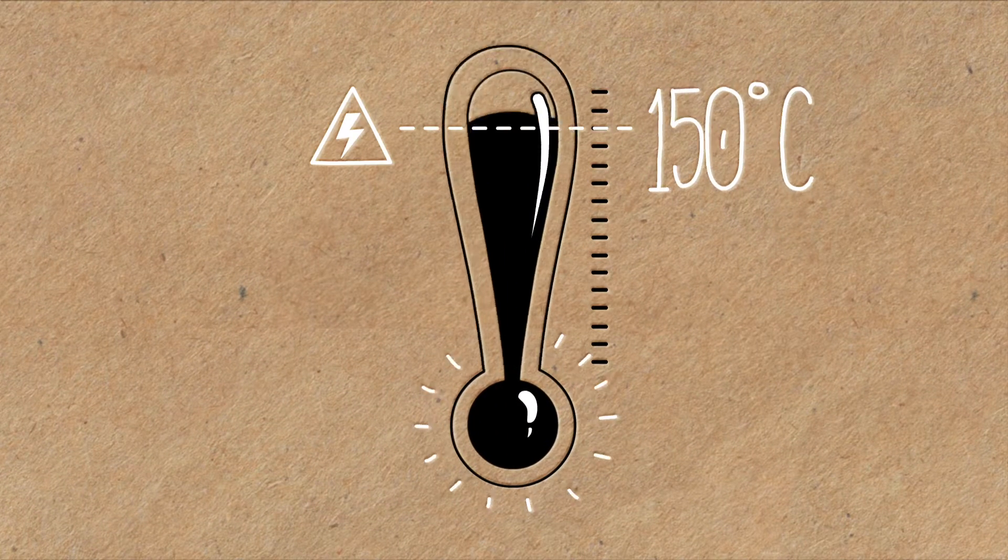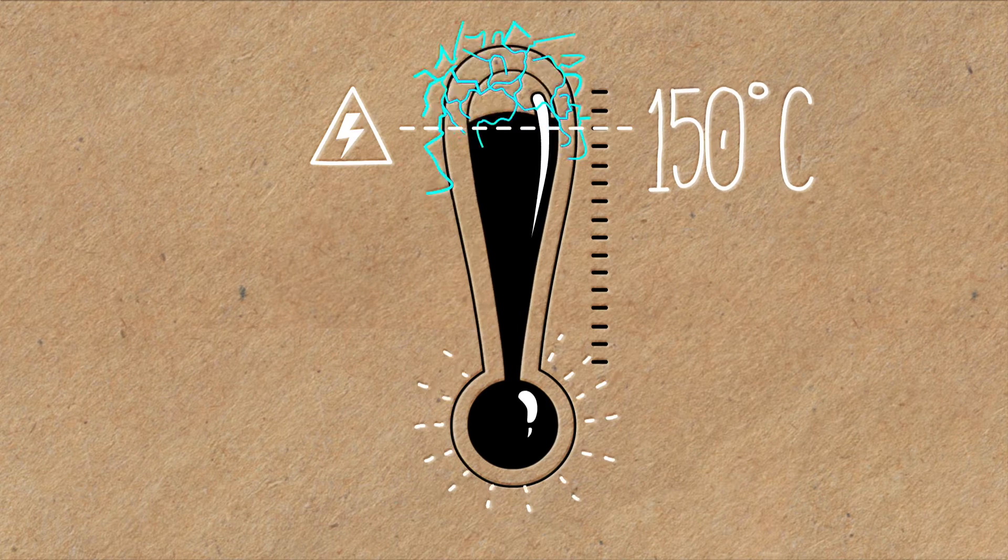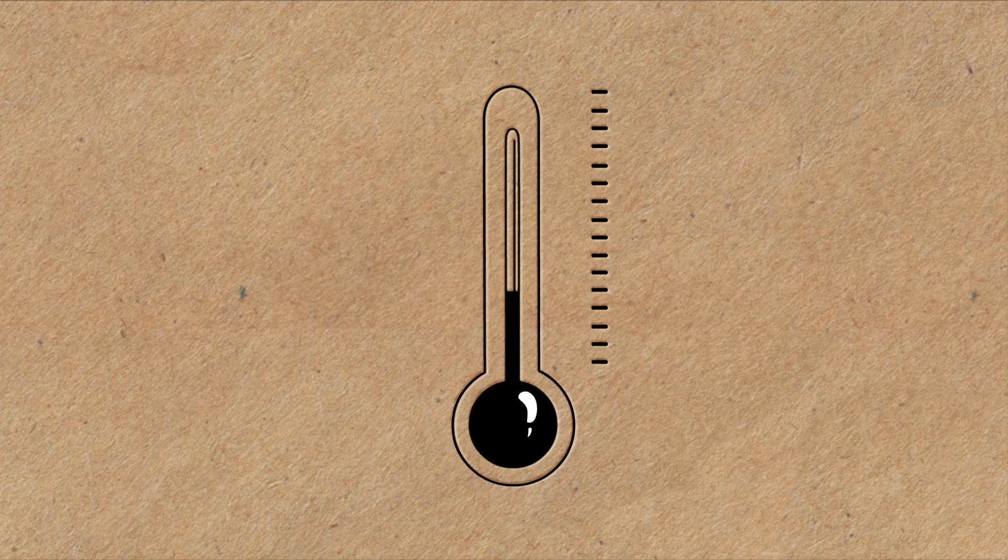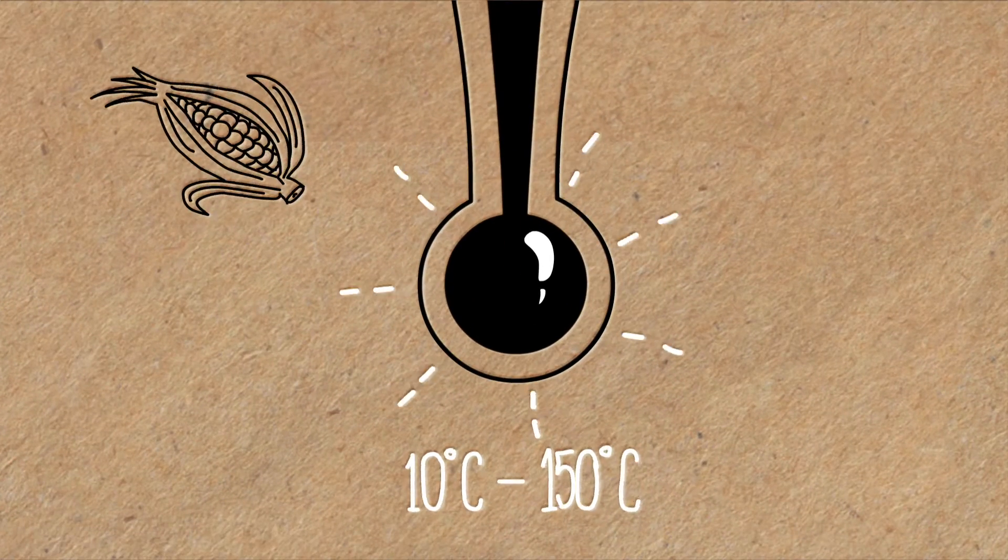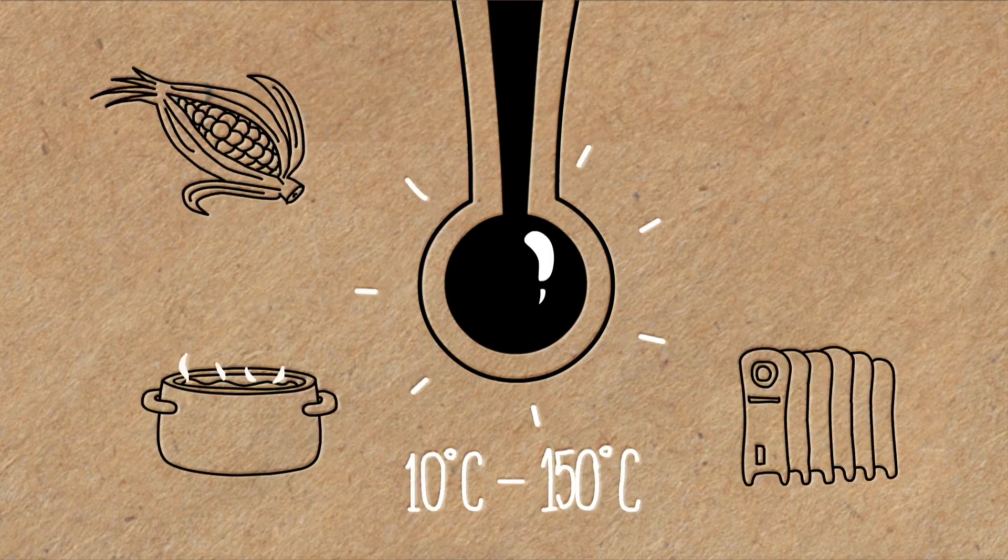When we can access temperatures above 150 degrees Celsius, we can generate electricity. When the underground temperature range is from 10 degrees Celsius to 150 degrees Celsius, it can be used directly for any process that requires heat. This is known as low temperature geothermal energy.